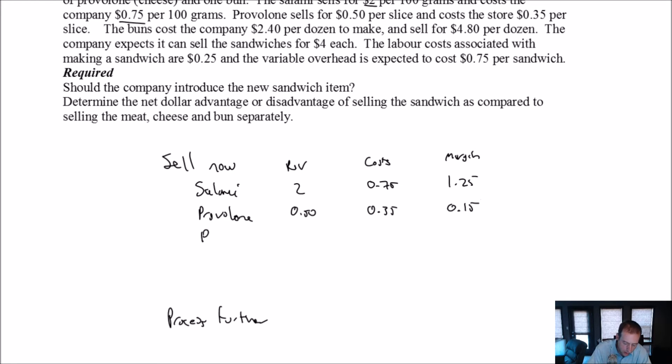And on the buns, now again, we're looking at this on a per bun basis. It's $2.40 per dozen, but we're not selling a dozen buns when we sell this. We were taking one of those buns. And so $2.40 divided by 12 means it costs us $2.40 a dozen, so it costs us 20 cents. To make it, though, the revenue will be 40 cents, $4.80 a dozen. So $4.80 divided by 12 means it's 40 cents in revenue a bun, means the margin on our bun is 20 cents.